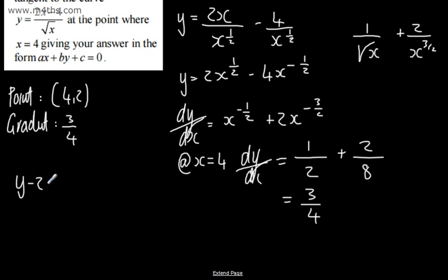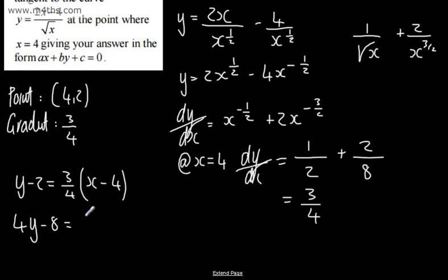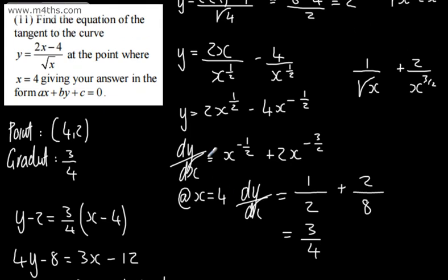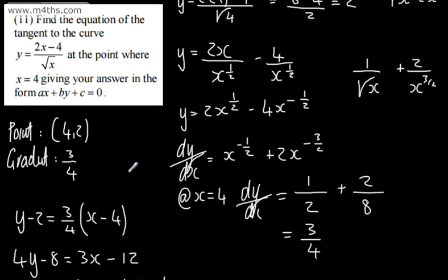Using the straight line equation: y minus 2 equals 3 over 4 times (x minus 4). Multiplying both sides by 4: 4y minus 8 equals 3x minus 12. Rearranging: 0 = 3x minus 4y minus 4. That is the equation of the tangent in the form ax + by + c = 0. All we need is a point found by substituting the coordinate, find the gradient function, substitute the x-coordinate, then put it in the form of a straight line.